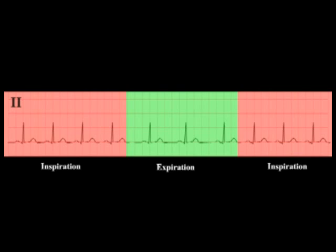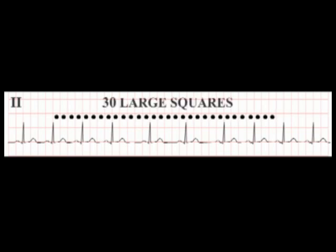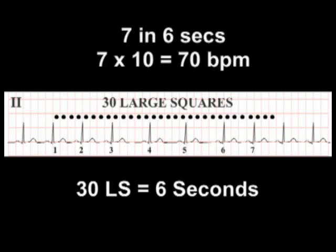We cannot use the RR interval technique to calculate heart rate when an irregular rhythm is present. Instead, count out 30 large squares. Remembering that 5 large squares equates to 1 second, 30 large squares corresponds to 6 seconds. Count the number of R waves in these 30 squares — in this case there are 7. Seven beats in 6 seconds gives a heart rate of 70 beats per minute.